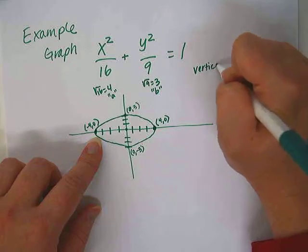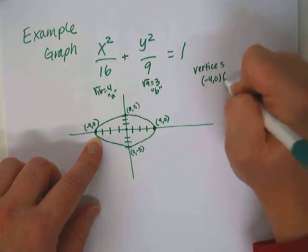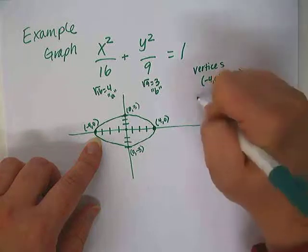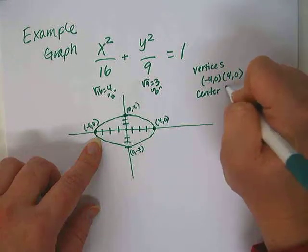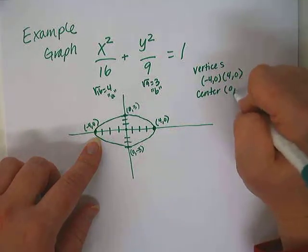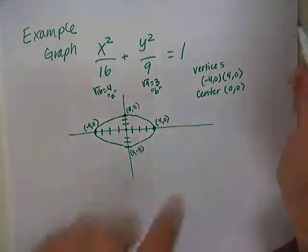So the vertices then are at negative 4, 0 and positive 4, 0. So where's the center located? 0, 0.